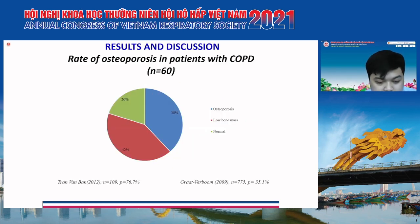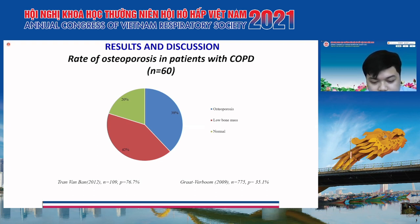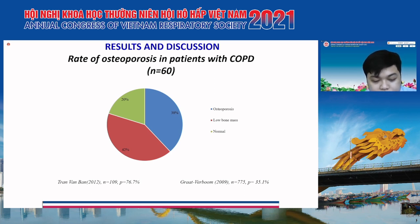The percent of patients with osteoporosis in our study is 38.3%, and the percent with osteopenia was 41.6%, similar to the Verbalm study in 2009, where the rate of osteoporosis was 35.1%. In the Chen Van Ban study, the percent of patients with osteoporosis was 76.7%, in which female patients accounted for 19% and had a higher average age, which increased the incidence of osteoporosis.